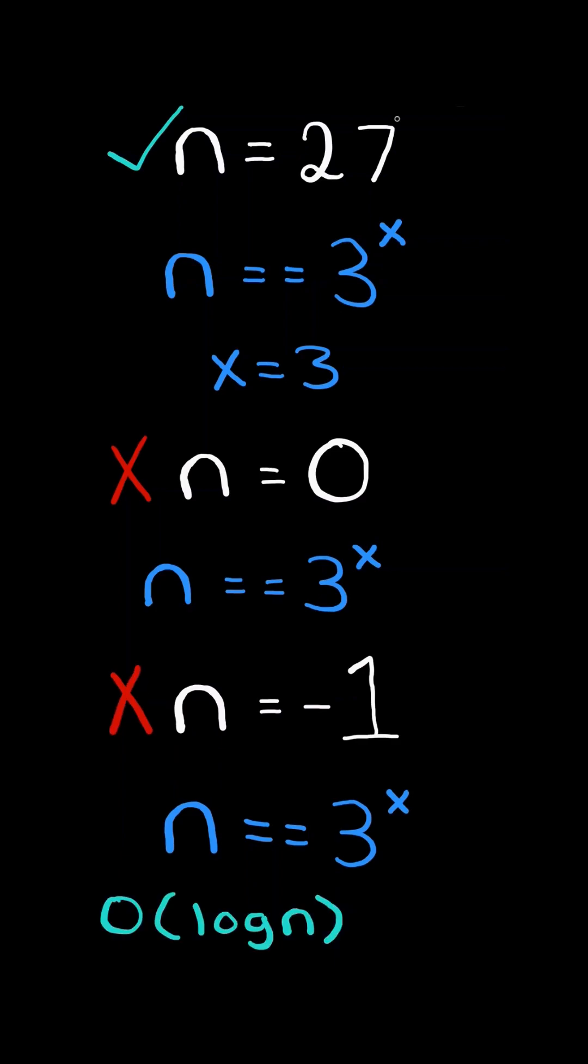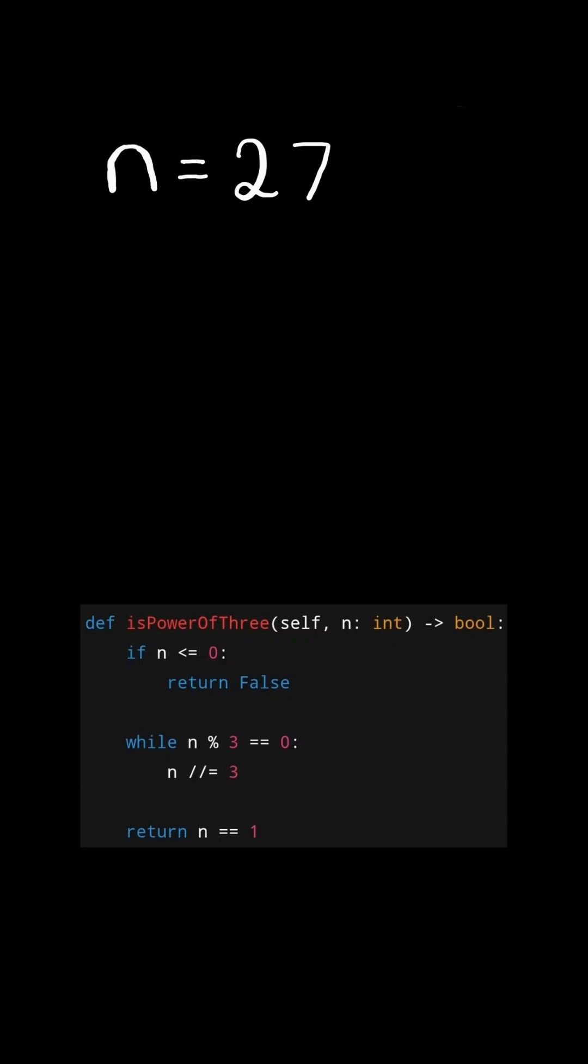We will solve this in O of log n time. First, consider the code below. As mentioned before, if n is negative, then there exists no x such that 3 to the power of x would give us a negative number, so we return false.